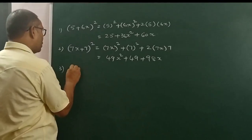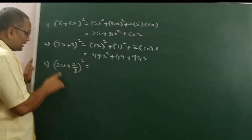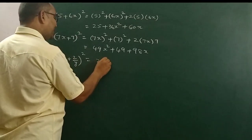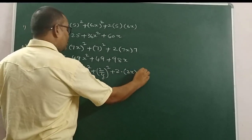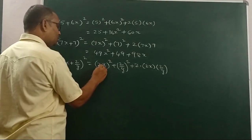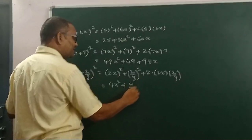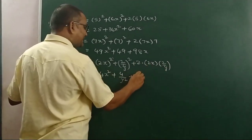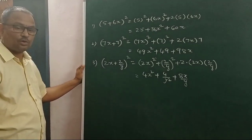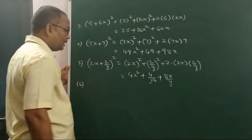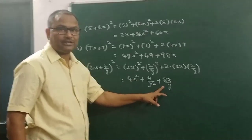Next: 2X plus 2 by Y whole square. This is also in the form of A plus B whole square. Here A is 2X and B is 2 by Y. That means 2X whole square plus 2 by Y whole square plus 2 into 2X into 2 by Y. That equals 4X square plus 4 by Y square plus 8X by Y. The simplification cannot be taken further because the three terms are different, so there is no further simplification.